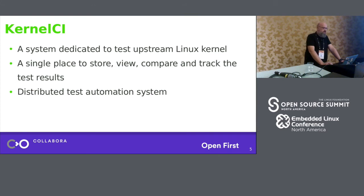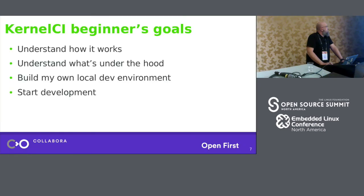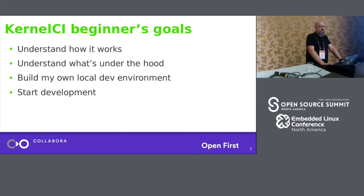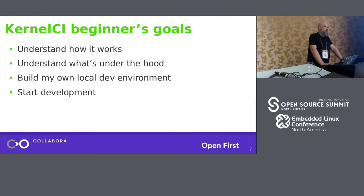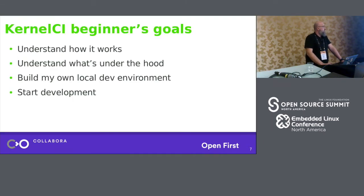Let me start with my first days in kernel CI — the kernel CI beginner's checklist. The first thing is to understand how kernel CI works: what the mechanisms are, what is triggered by what, and what actions you need to take to get the results you need. When you know the mechanisms, you need to understand what's under the hood — the applications involved, software components, tools, and what needs to interact with what. Later, you can build your own local development environment and start development.